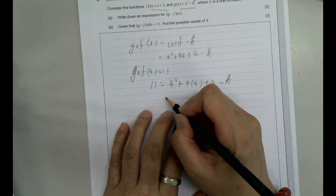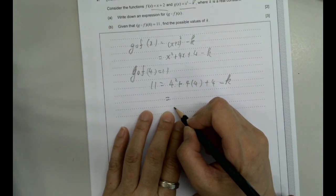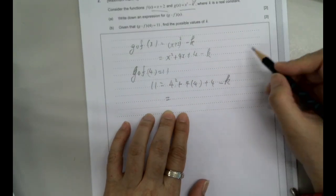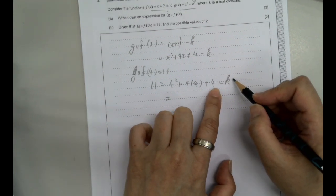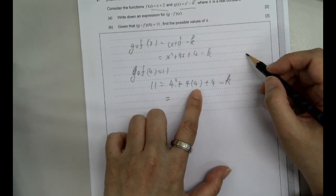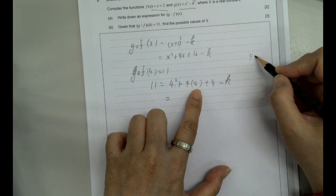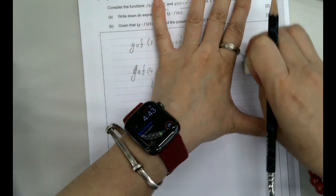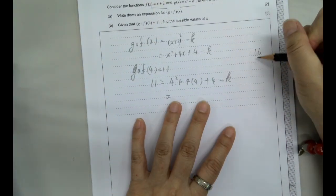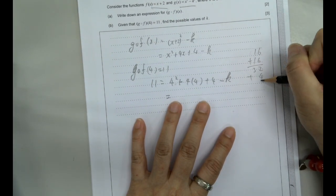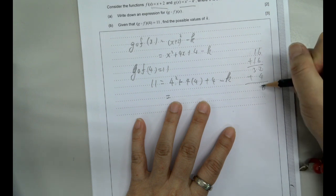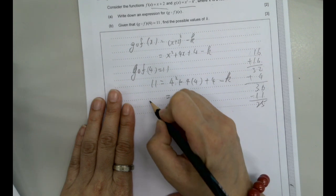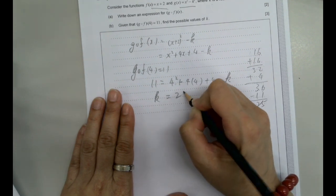So calculating... 16 plus 16 is 32, plus 4 is 36. 36 minus 11 is 25. So we have k squared equals to 25.